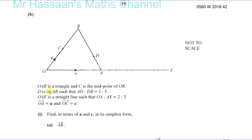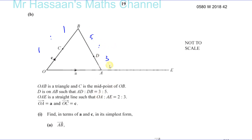They told us that OAB is a triangle and C is the midpoint of OB, so that's in the ratio 1 to 1. And D is on AB such that AD to DB is 3 to 5, so that's like 3 parts and 5 parts because of the ratio. This is just ratios I'm writing down, not lengths.